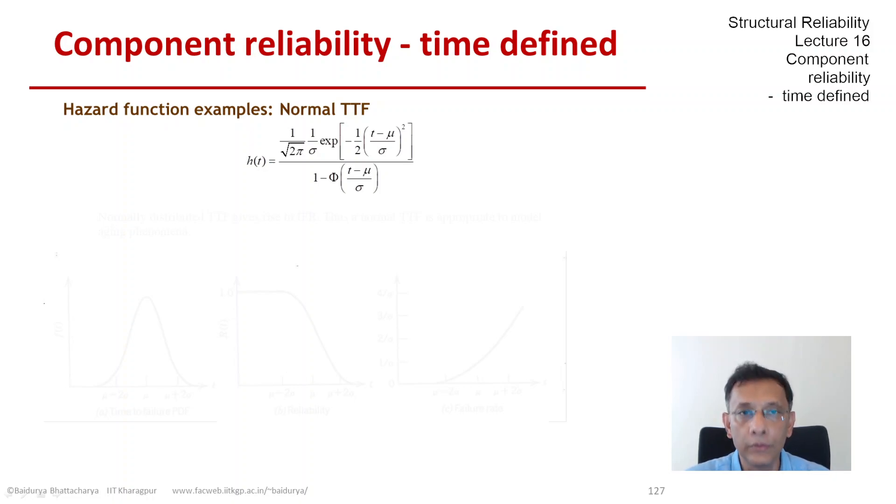So let's make sure that we understand this, that even though we have a normally distributed TTF, we are defining it for only positive values of T, which means that we have truncated the distribution at T equals 0, left truncated. And we have normalized the density function so that it still checks all the boxes.